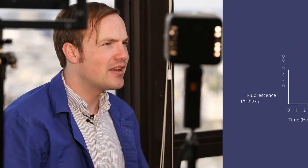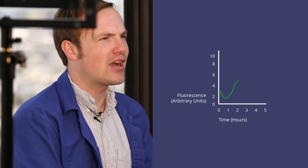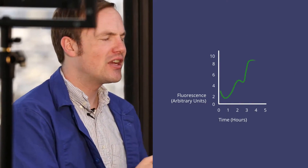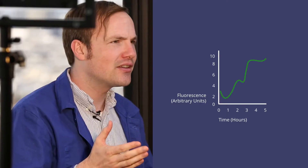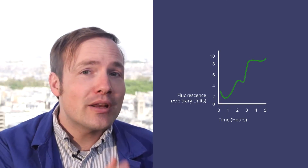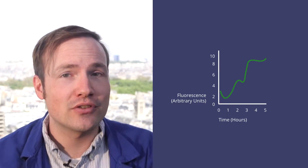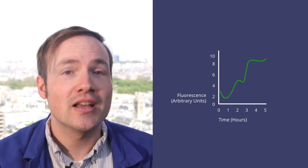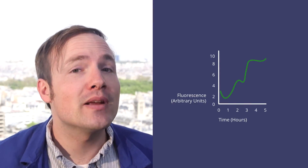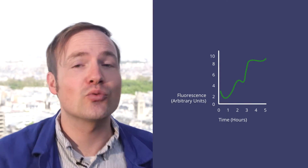Somebody took a measurement, they plotted it on a graph, and they labeled it arbitrary units. When I was first starting out, I found this super confusing. On the one hand, I had my teachers, and they would say every measurement needs to be reported in physical units.